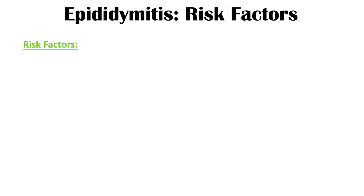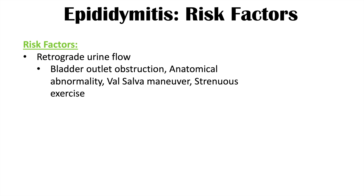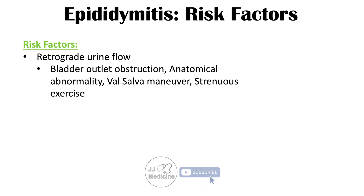Understanding the causes helps us better understand the risk factors. Retrograde urine flow leads to more specific risk factors, including bladder outlet obstruction — which can be due to benign prostatic hyperplasia or prostate cancer. Anatomical abnormalities are more common in children; if there is some anatomical abnormality leading to retrograde urine flow, this can also lead to epididymitis.